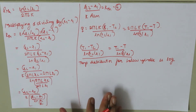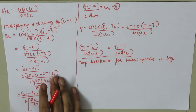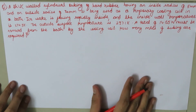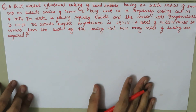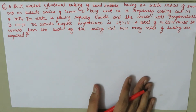Now let's work on a problem to get a deeper understanding of this concept. A thick-wall cylinder tubing of hard rubber has an inside radius of 5 mm and an outside radius of 20 mm, used as a temporary cooling coil in a bath. Ice water flows inside with an inside wall temperature of 274.9 K and outside surface temperature of 297.1 K. A total of 14.65 W must be removed. How many meters of tubing are required?